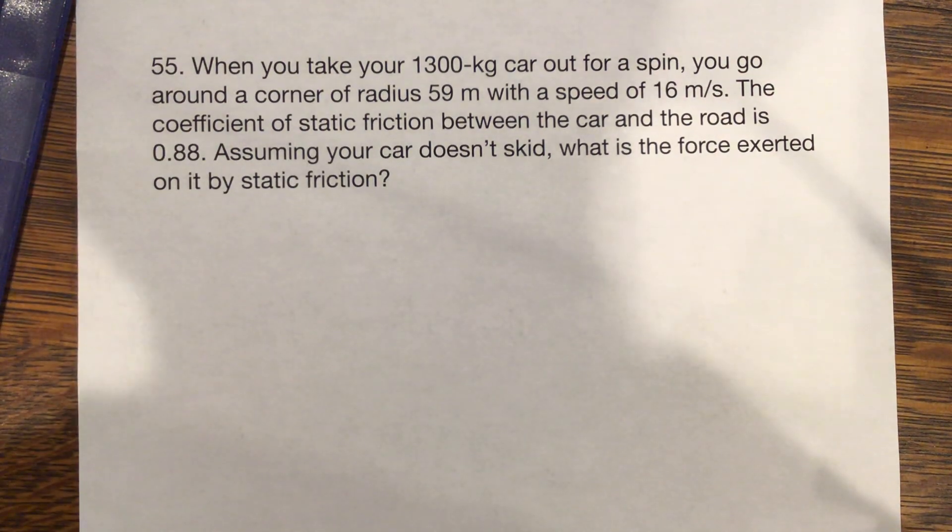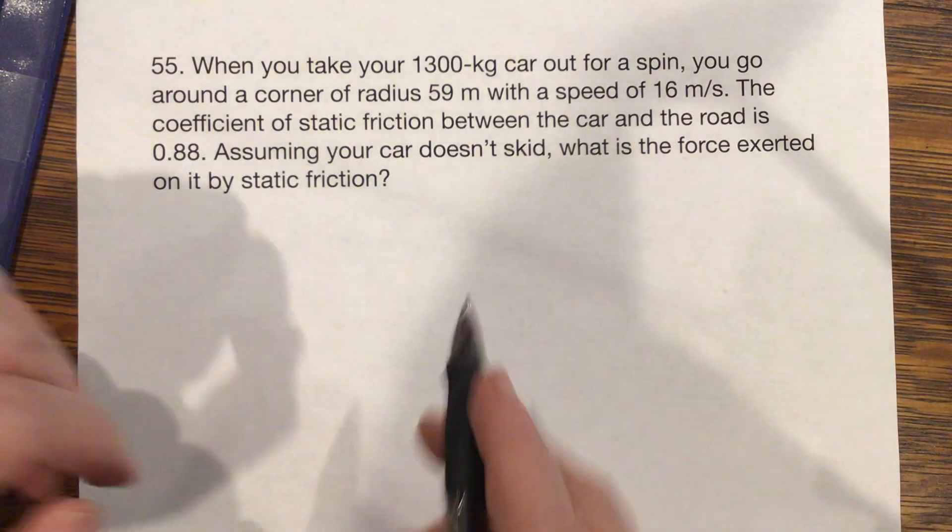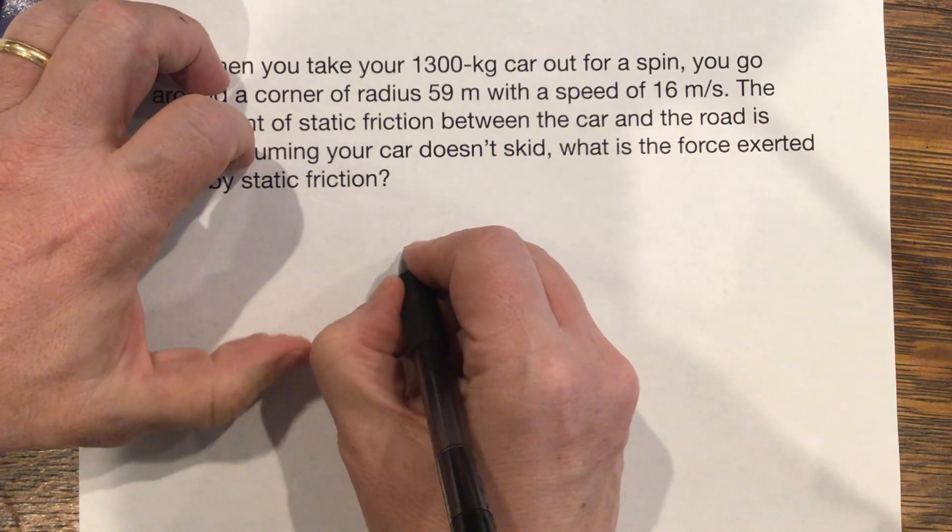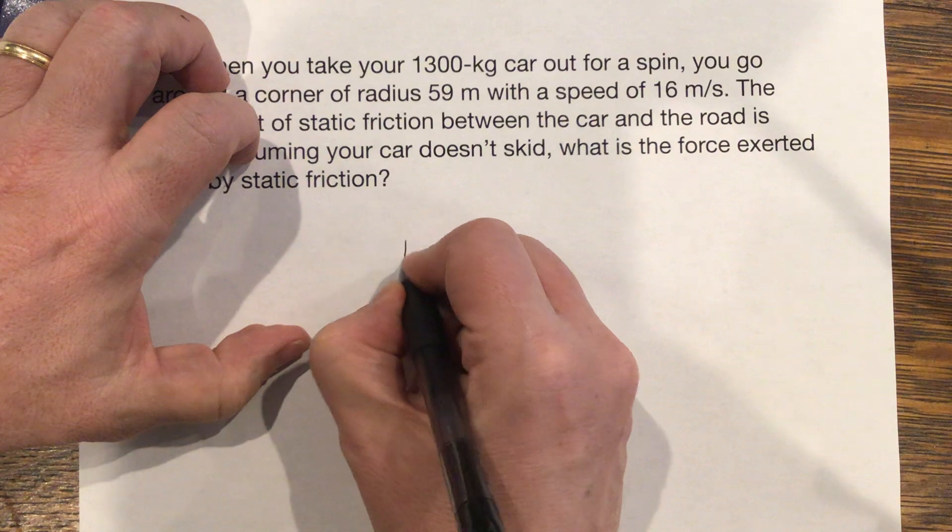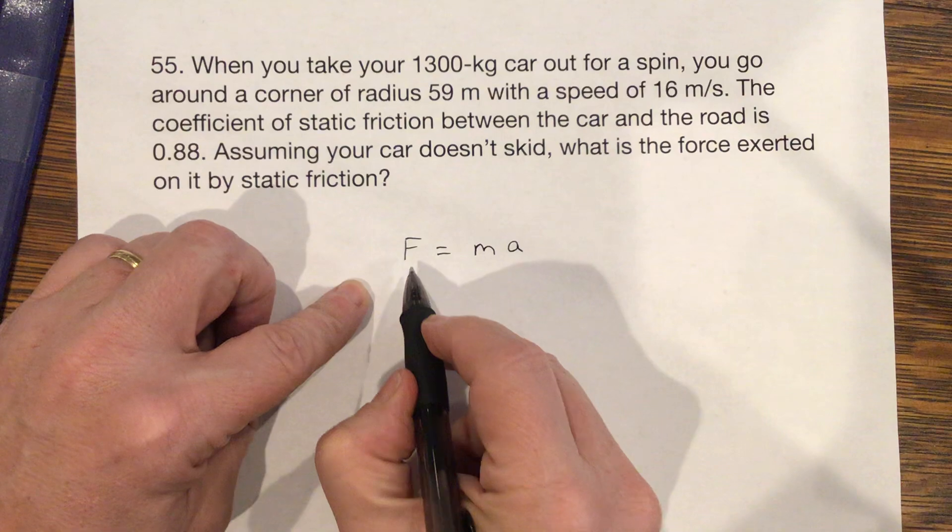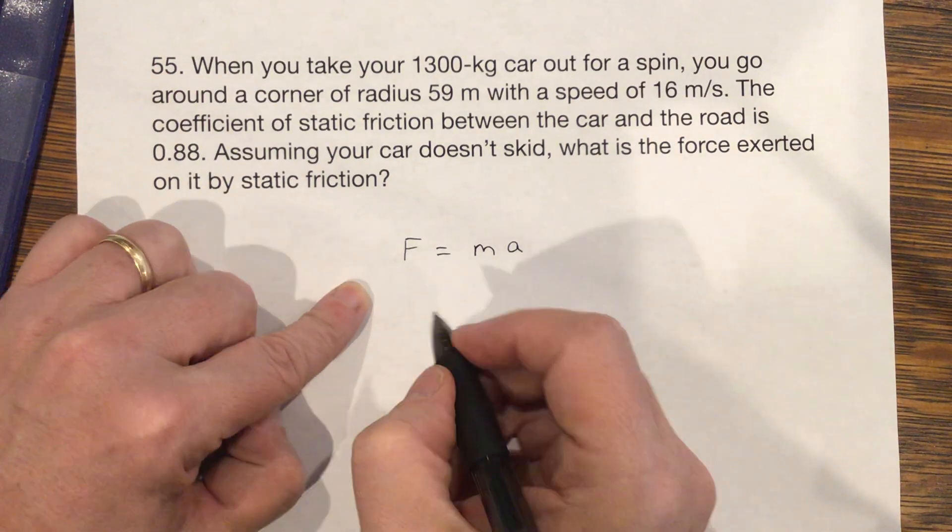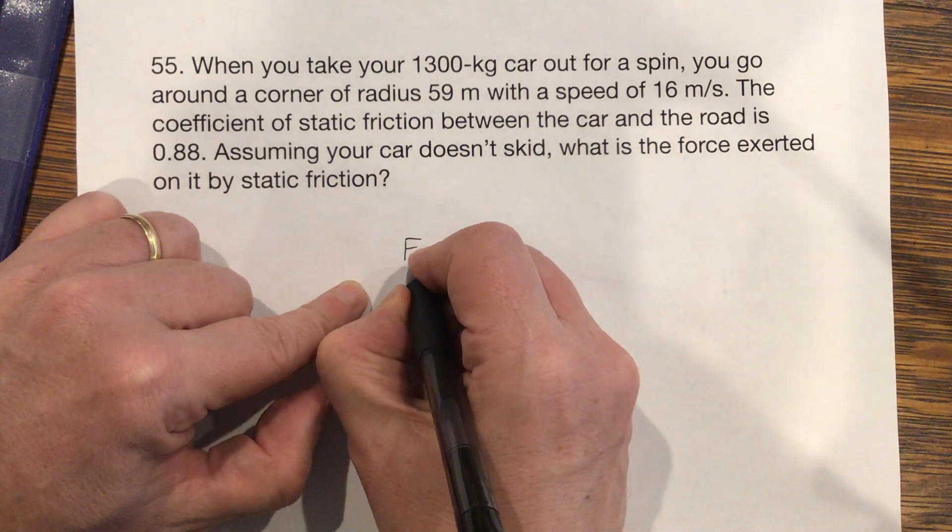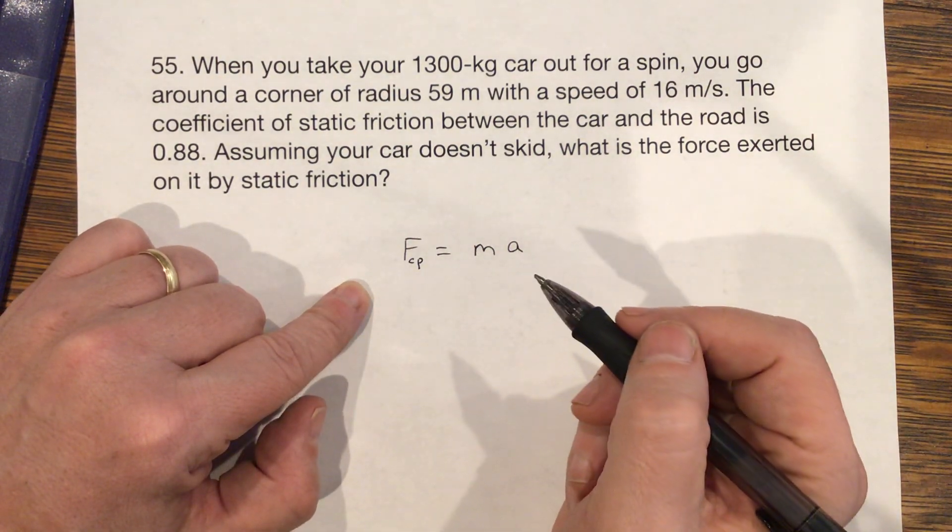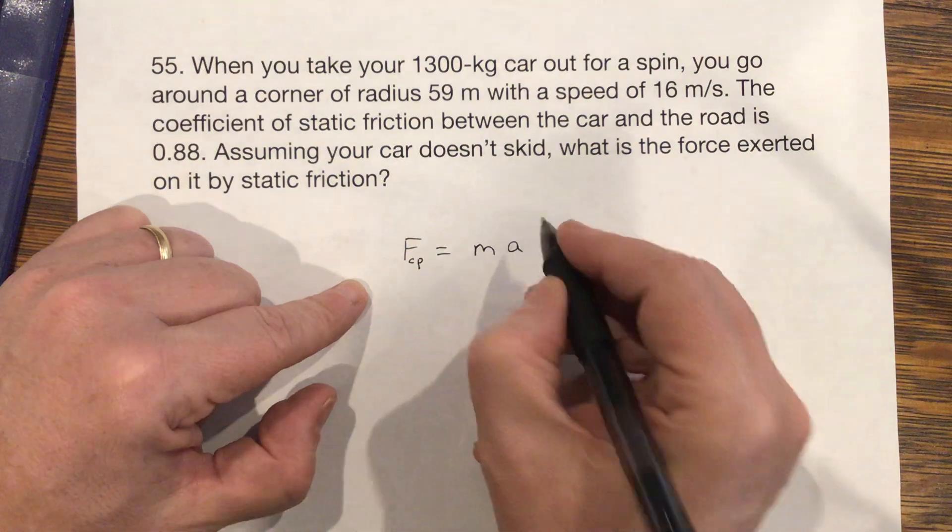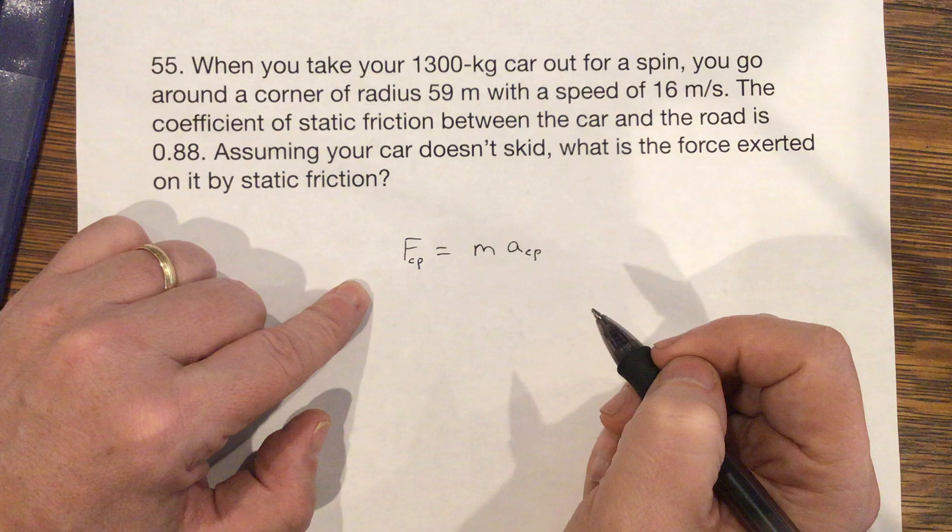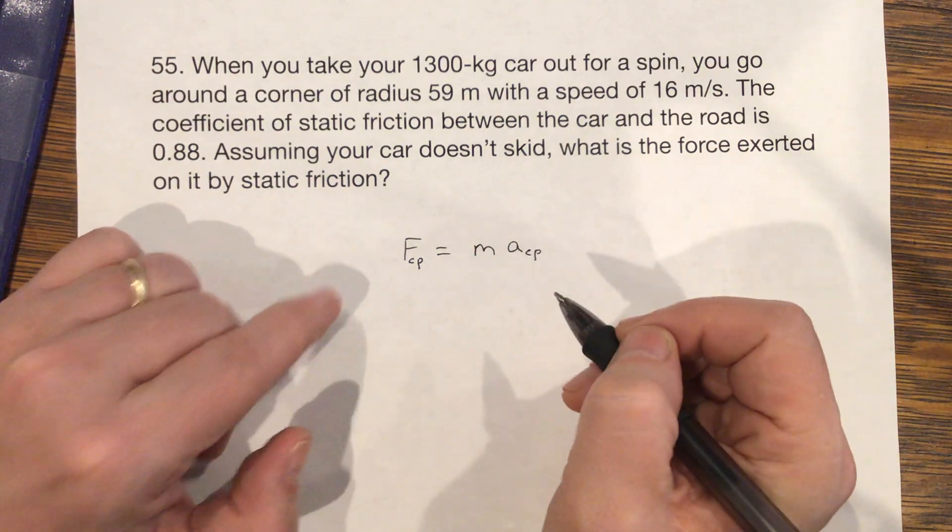Okay, well, you've got a circle. Newton's Law is force equals mass times acceleration, and we can modify this by saying the centripetal force, which is pulling something in towards the center of a circle, is equal to the mass times the centripetal acceleration. That's the acceleration going into the middle of the circle.